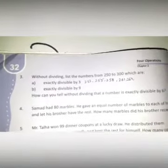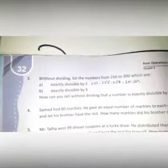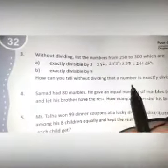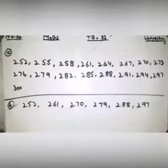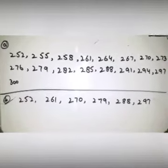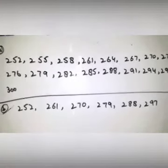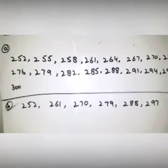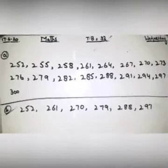Without dividing, list the numbers from 250 to 300 which are exactly divisible by three. You simply have to read the table of three, or find the multiples of three. The remaining numbers are the answer for part A. Part B was to find the list of numbers from 250 to 300 which are exactly divisible by nine. Part A is divisible by three and part B is divisible by nine — you can see the answers.